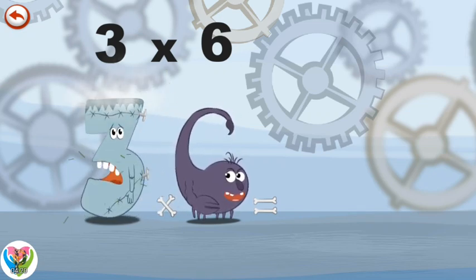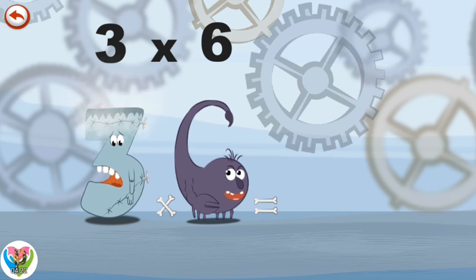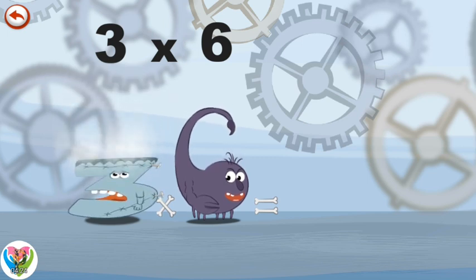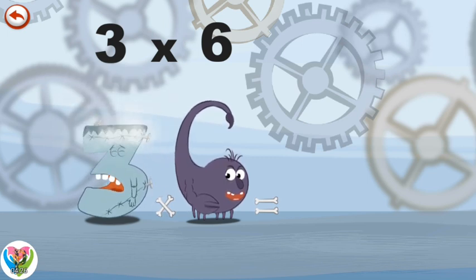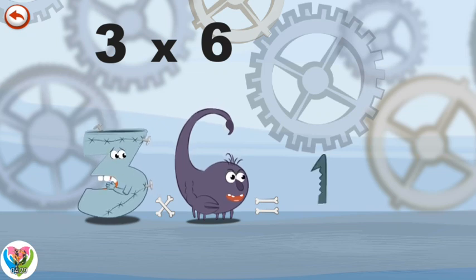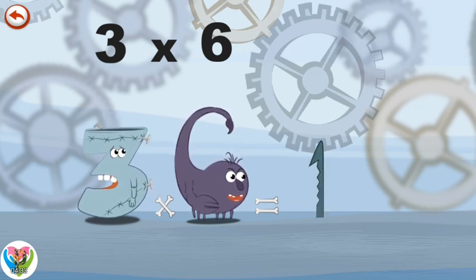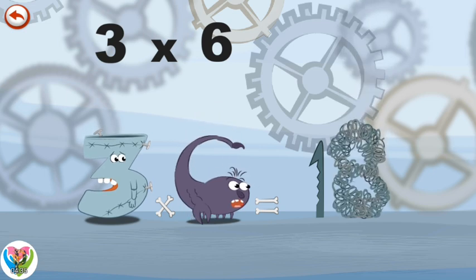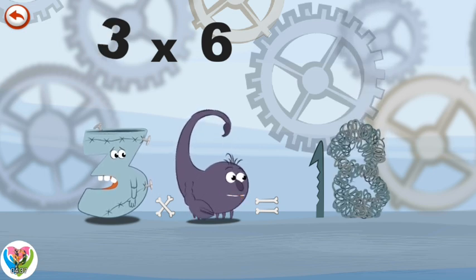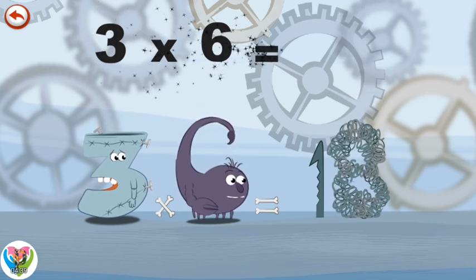The pressure blows the top of Threkenstein's head off in the shape of a 1, followed closely by his brain springing out in the shape of an 8. Yuck! 3 times 6 is 18.